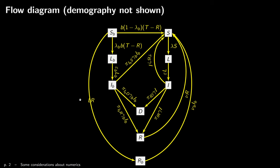So I'm going to show you the flow diagram. The model, as I pointed out in the first lecture, is a discrete time model. There are different ways to formulate discrete time models. The one we are using here is somewhat analogous to the way we would do an ODE. I should point out that here I'm not showing the demography, and also that the notation is mine.